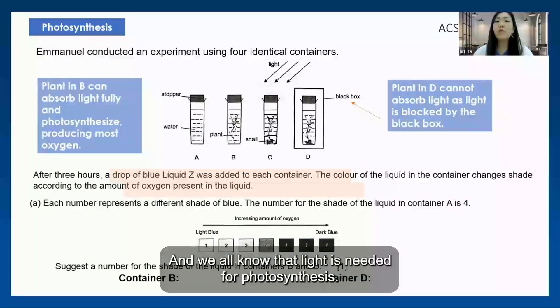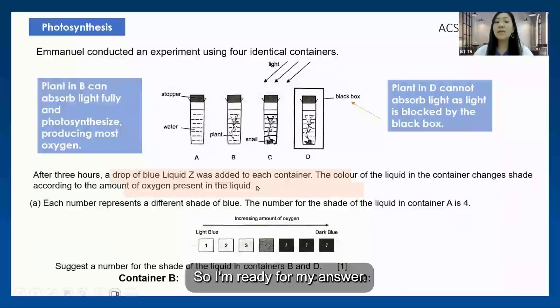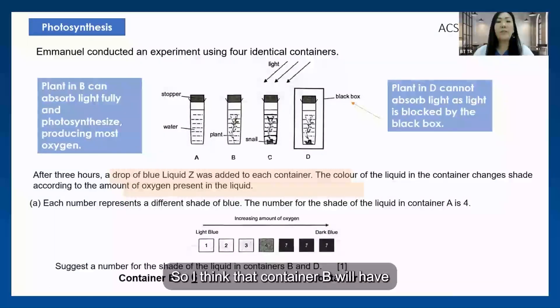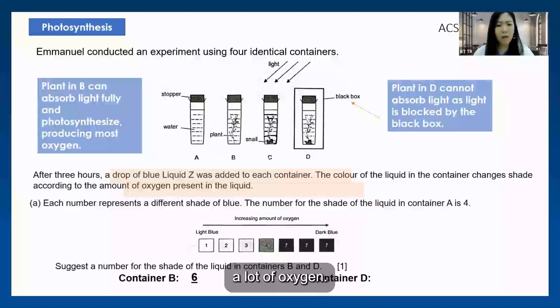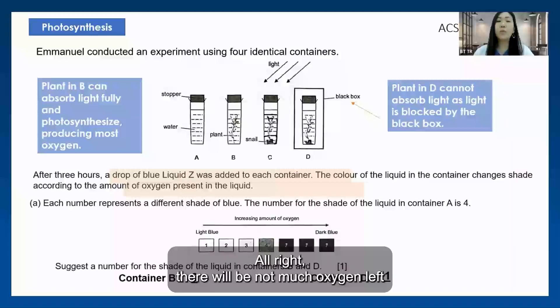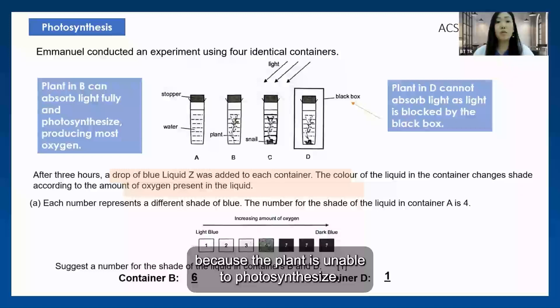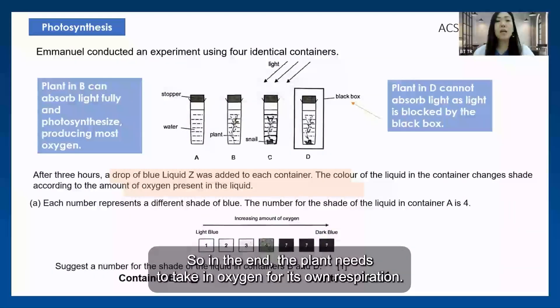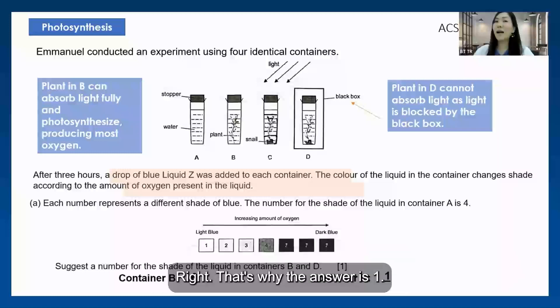I'm ready for my answer. I think that container B will have a lot of oxygen, so I put six, which is dark blue. Whereas for container D, there will not be much oxygen left because the plant is unable to photosynthesize. In the end, the plant needs to take in oxygen for its own respiration. That's why the answer is one.